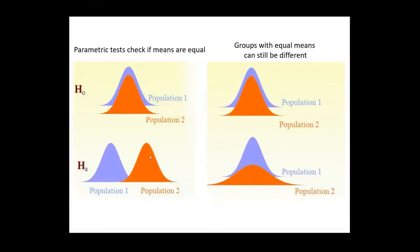What it will not check is the spreads of your two groups. If you are in this case, then the parametric test will happily tell you that the two groups are the same. It cannot see a difference here because the peaks are the same.